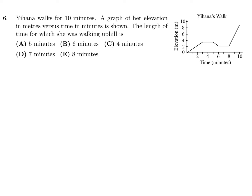Question number 6. Yai Hana walks for 10 minutes. A graph of her elevation in meters versus time in minutes is shown. The length of time for which she was walking uphill is determined by when her elevation increases. That's from 0 to 3 minutes — a 3-minute period — and from 8 to 10 minutes — another 2 minutes. So 3 plus 2 is 5 minutes. Number 6, the answer is B.